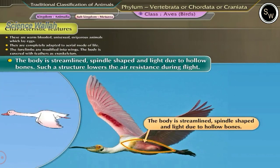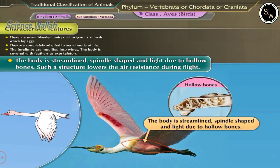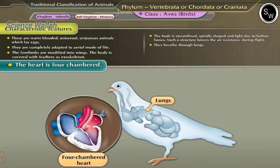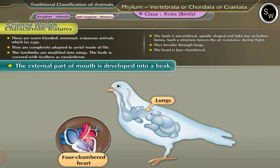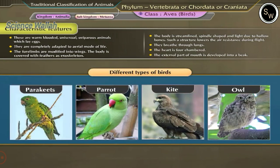The body is streamlined, spindle-shaped, and light due to hollow bones. Such a structure lowers air resistance during flight. They breathe through lungs. The heart is four-chambered. The external part of the mouth is developed into a beak. Different types of birds include parakeets, parrots, kites, and owls.